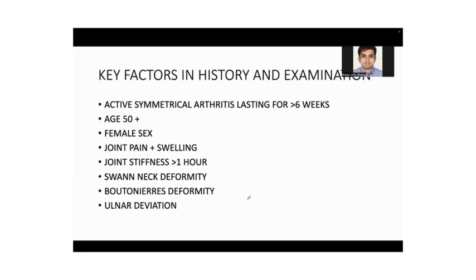Key factors you will find in history and examination: active symmetrical arthritis typically lasting more than six weeks, most commonly seen in people 50-plus years of age, more common in female sex. There will be joint pain, swelling, and joint stiffness lasting more than an hour. Swan neck deformity, boutonniere deformity, and ulnar deviation are important findings — I'm going to show you real patient pictures of all these.